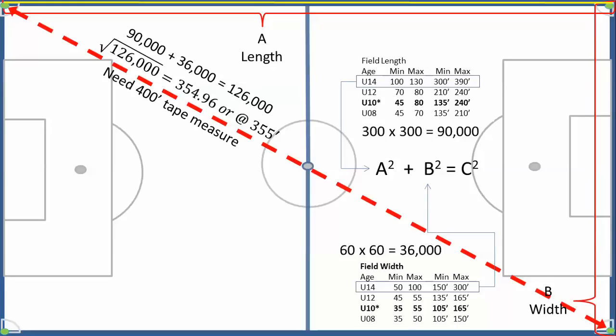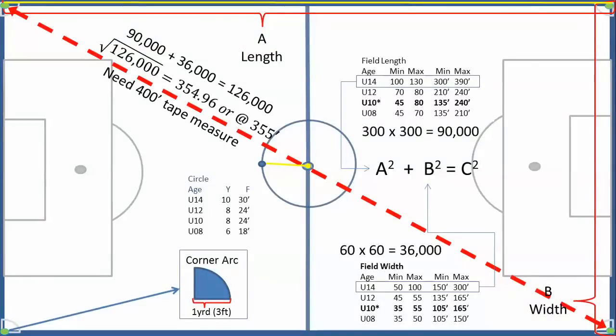The dimensions should be provided to you by your league. Start by putting a stake in the center of the circle, and then drawing a tape out to the required length. While keeping the tape tight, walk the circle, marking the line along the way, and then finish up with your lining machine. Finally, complete the corner arcs, which extend one yard into the field.